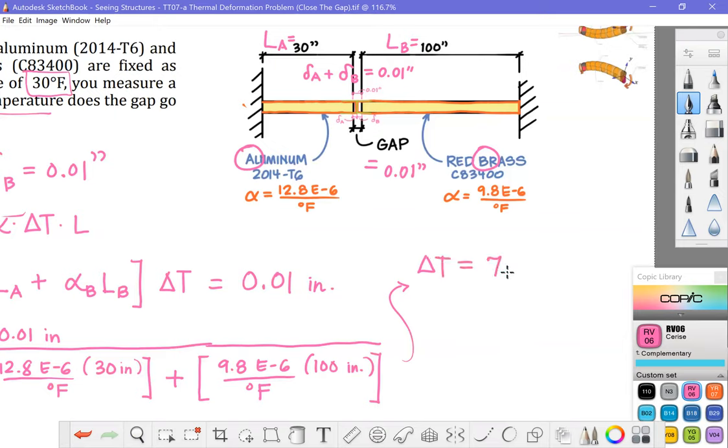is equal to, to three sig figs, 7.33 degrees and of course this is going to be a temperature increase. So if we raise the temperature 7.33 degrees we will close that gap and those two surfaces will just come into contact.